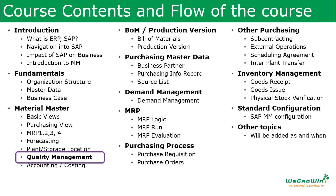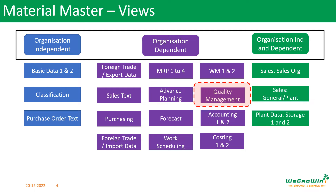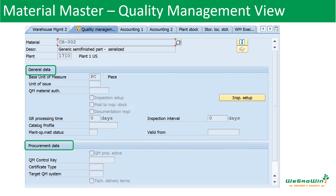As part of materials management, we discussed the basic views, purchasing view, MRP views, forecasting, and plant storage location. Now we are going to discuss quality management views. The quality management view contains plant-dependent parameters, and we have this view under the organization dependent section. The quality management tab allows the quality department to define the basic quality requirements for the material to be maintained for each plant.